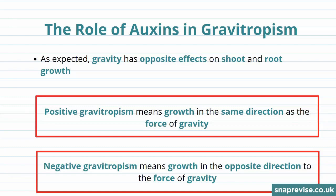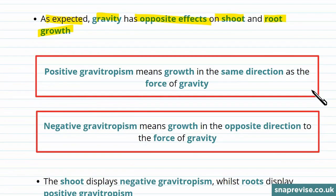Let's talk about gravitropism. As expected, gravity has opposite effects on shoot and root growth. Positive gravitropism means growth in the same direction as the force of gravity, which we see in plant roots. Negative gravitropism means growth in the opposite direction to the force of gravity, which we see in plant shoots.